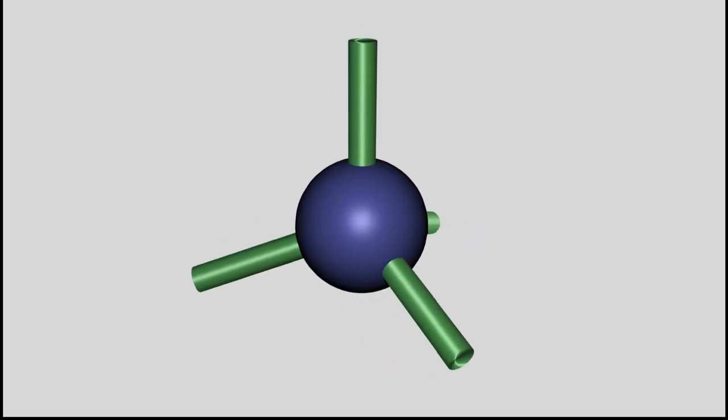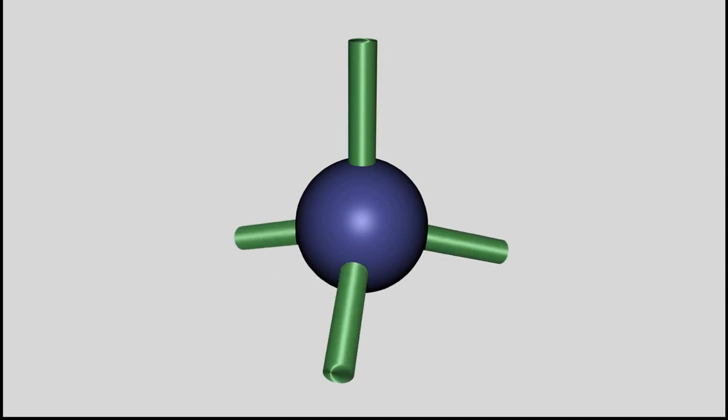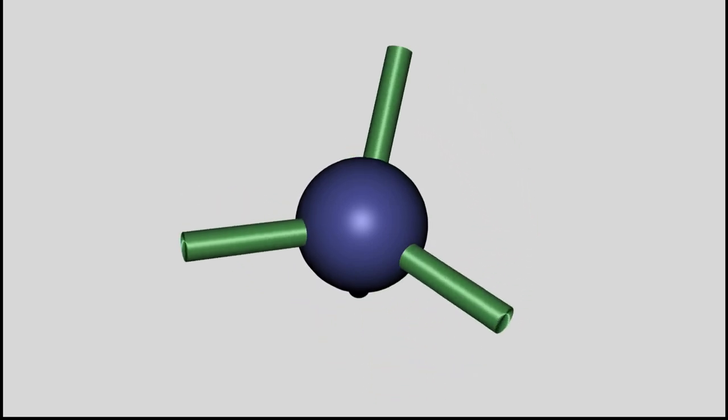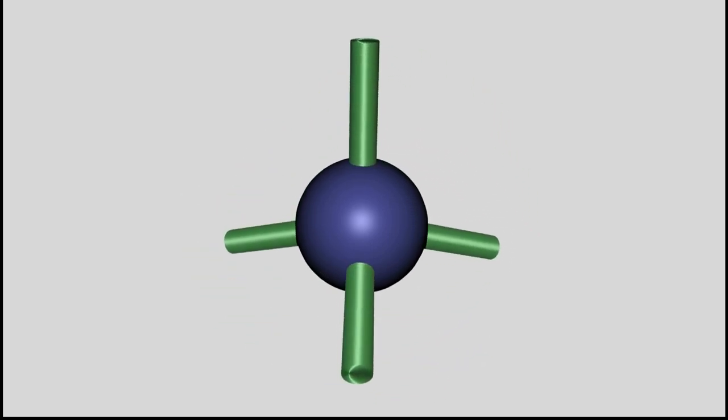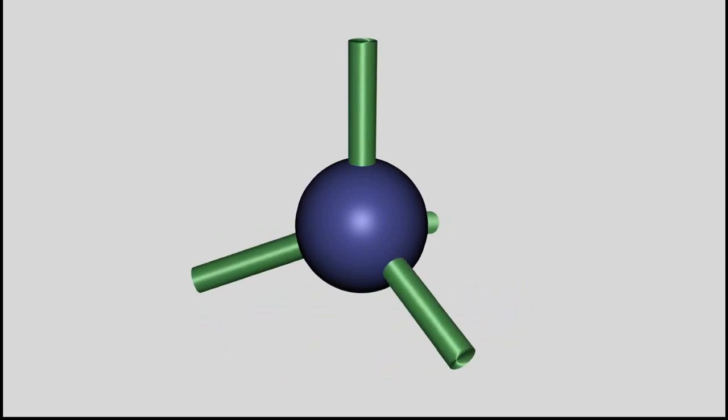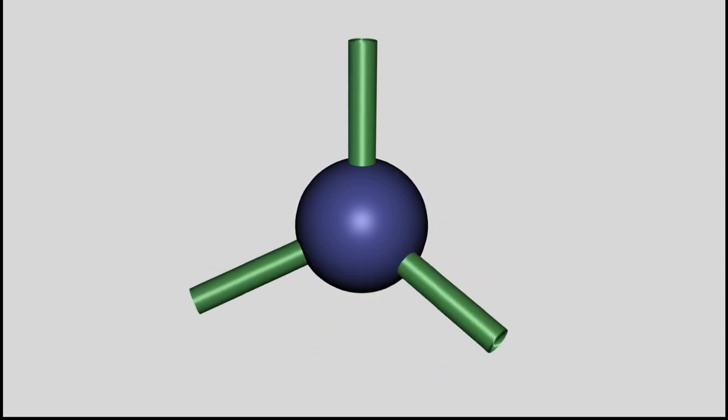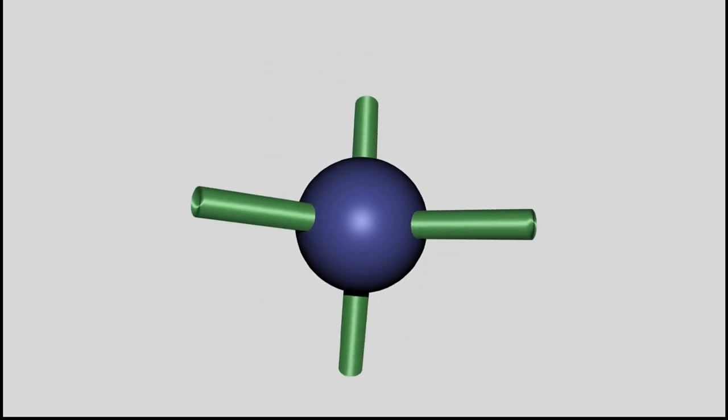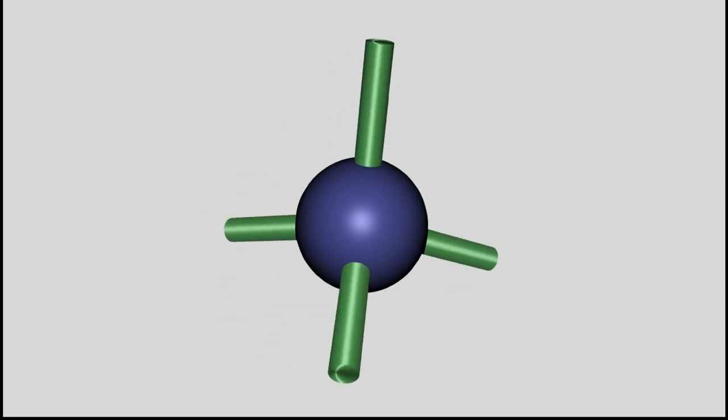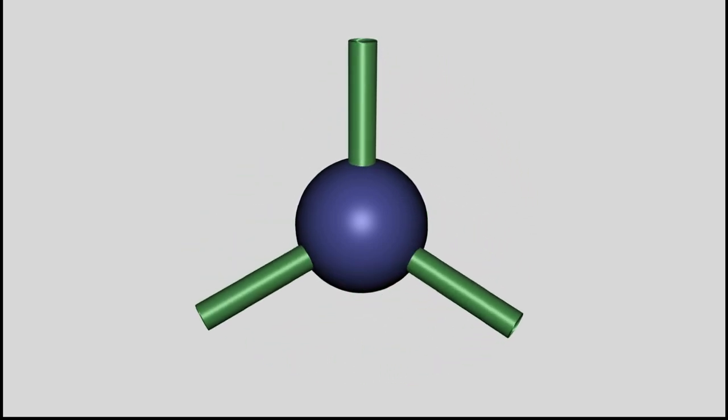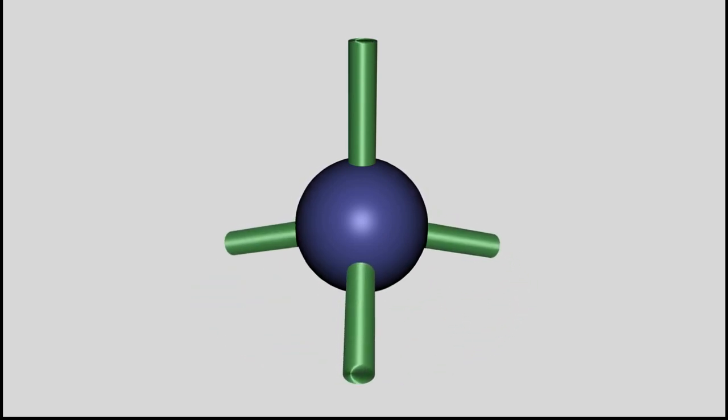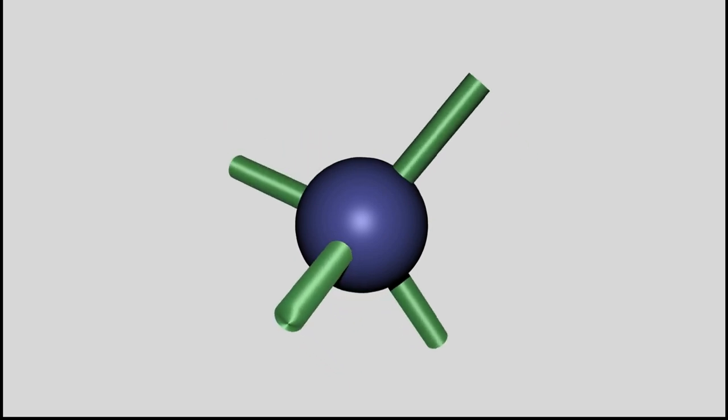The ball and stick model is often used to illustrate covalent bonds. In doing so, the atoms are represented by spheres and they are connected by rods, which represent the bonds. The angles between the rods are the same as the observed angles between the bonds. Like demonstrated, the angle between the hybridized orbitals of silicon is about 109.5 degrees.